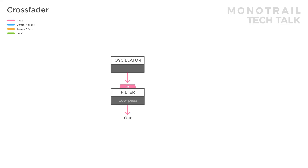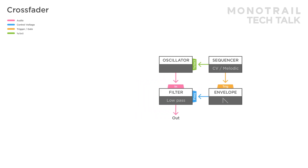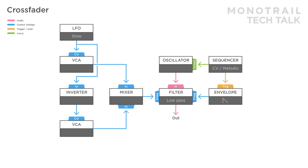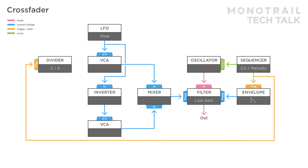Just like the panner, crossfaders are great for all sorts of interesting tricks with control voltages. Here you see a simple oscillator filter voice, controlled with sequencer and envelope. Two VCAs with an LFO are set up to crossfade between two input signals used to modulate the filter. To create some interesting rhythmic movement, a copy of the sequencer's clock is used to advance a clock divider. A divide by 3 and divide by 8 gate output are used to feed the crossfader setup, creating interesting fluctuating synced patterns.